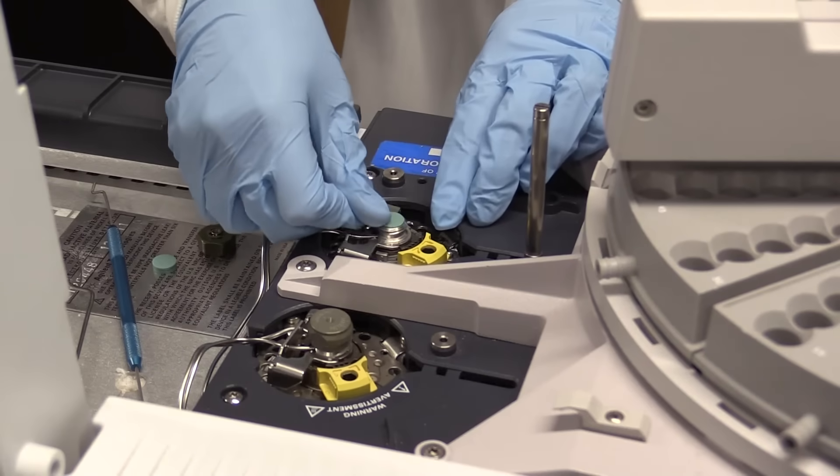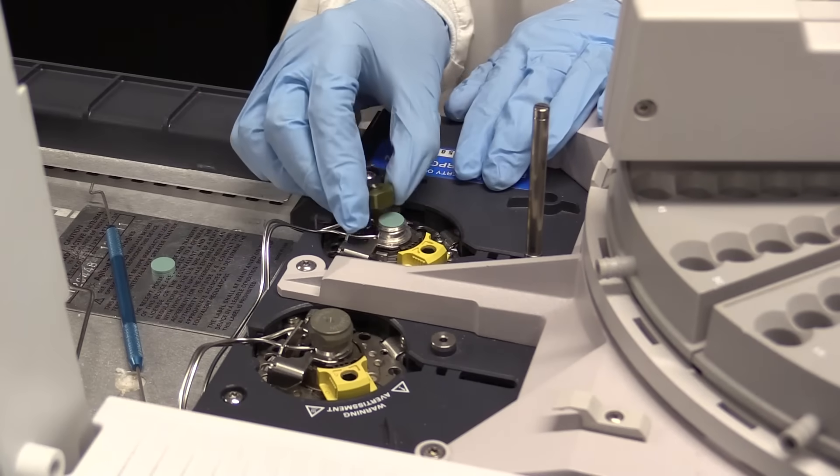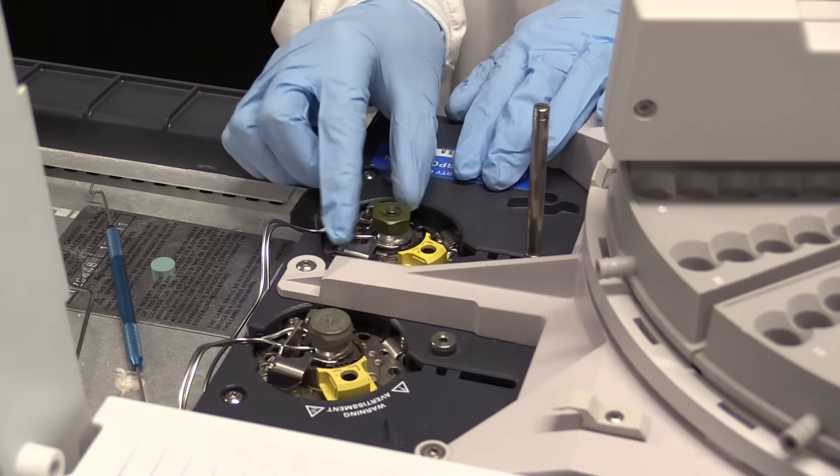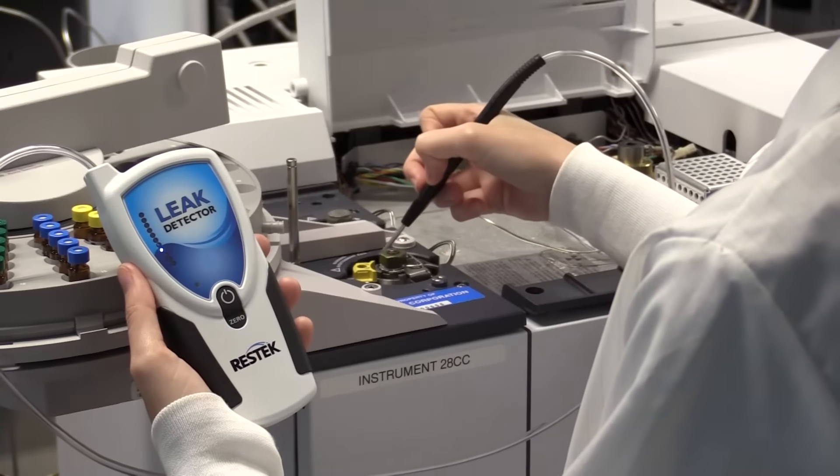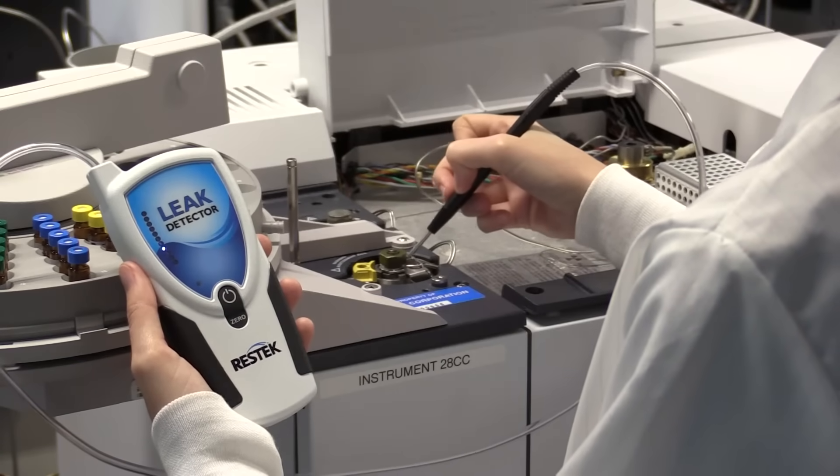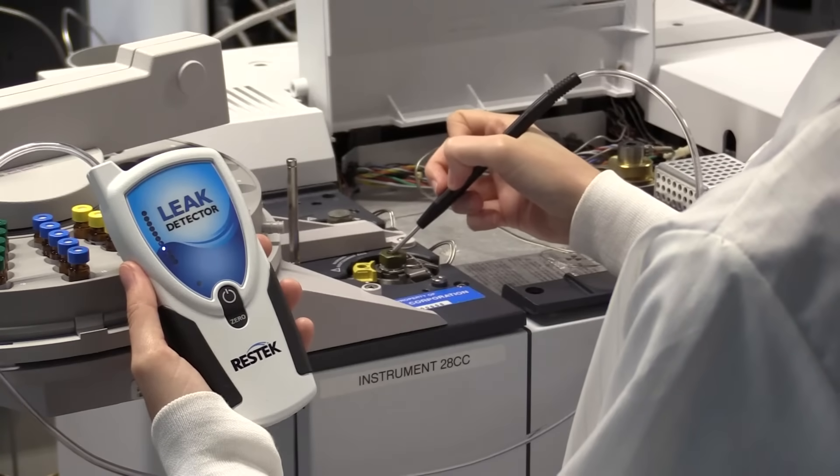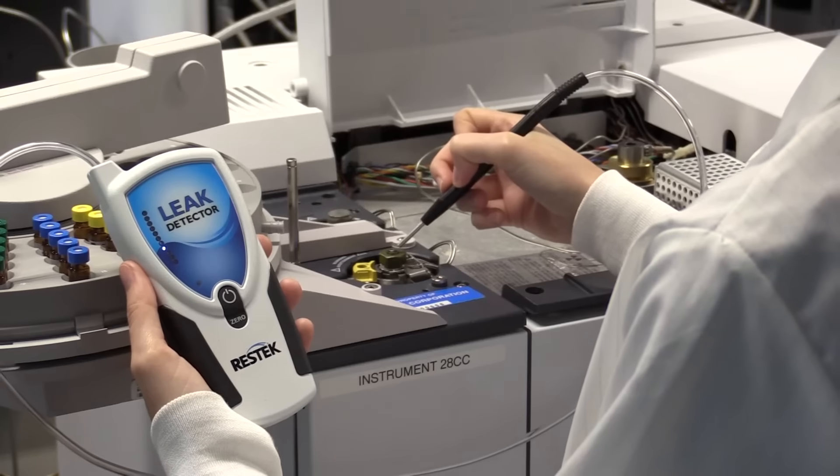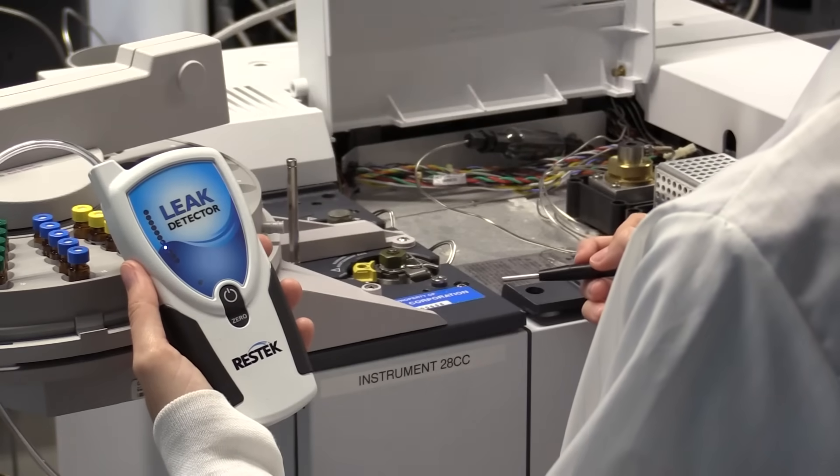The septum is a common source of leaks. If the septum is leaking, simply replace it. By checking the septum regularly, you will be able to learn how long your septum generally lasts and avoid unplanned downtime by anticipating when to change it before it starts to leak.